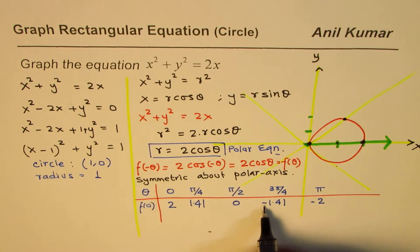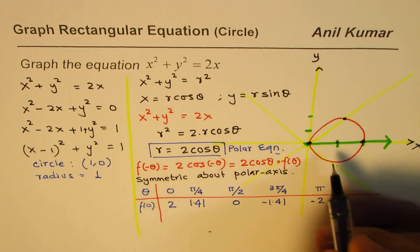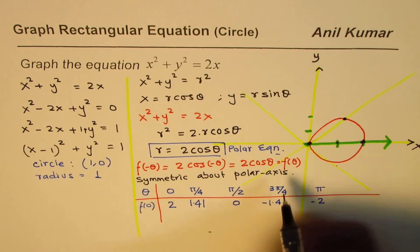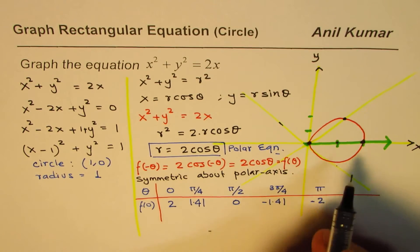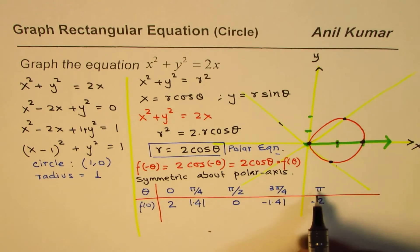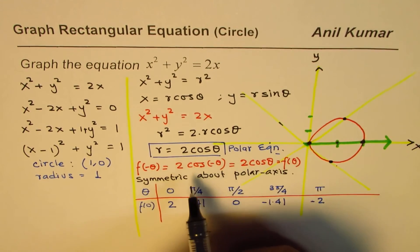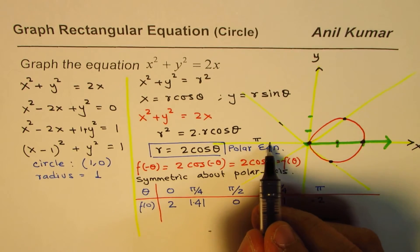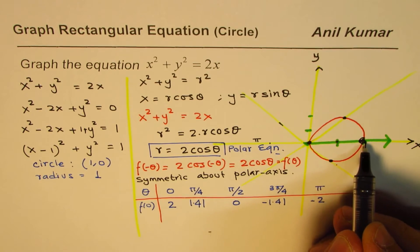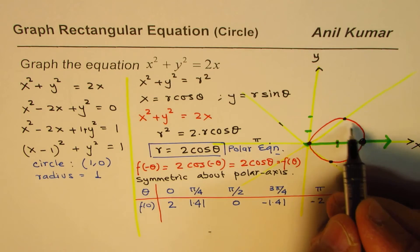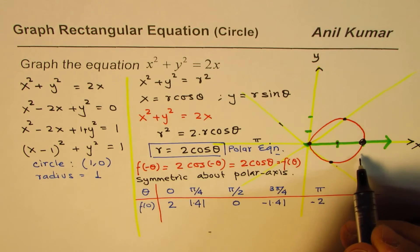At θ equals 3π/4, we get r equals minus 1.41. The angle 3π/4 is this line, and a negative r means we go 1.41 units and then reflect it, landing at this point on the graph. At θ equals π, r is minus 2, so we take 2 along the π direction and reflect it to the same point. These values repeat, giving us the same circle.